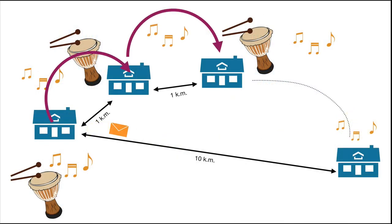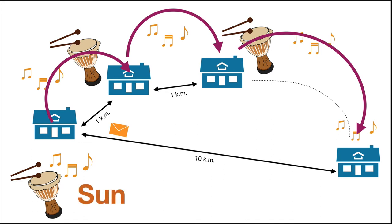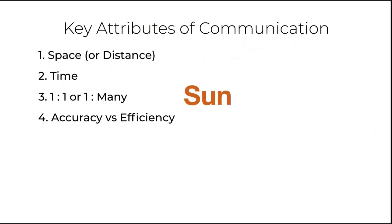With each hop, the chances of the message getting distorted increase. To maintain the accuracy of a key piece of information that needs to be transmitted, you have to add some more information. In the case of the African drummers, let's say they had to convey the word sun — S-U-N. To ensure that S-U-N sun does not become S-O-N son, they would add more information to the message — for example, 'sun that shines in the sky.' By adding more information to the key message, the drummers would ensure that even across hops from village 1 to village 10, the message remains clear and is not misinterpreted, and S-U-N sun remains S-U-N sun. Accuracy in communication is thus being ensured.